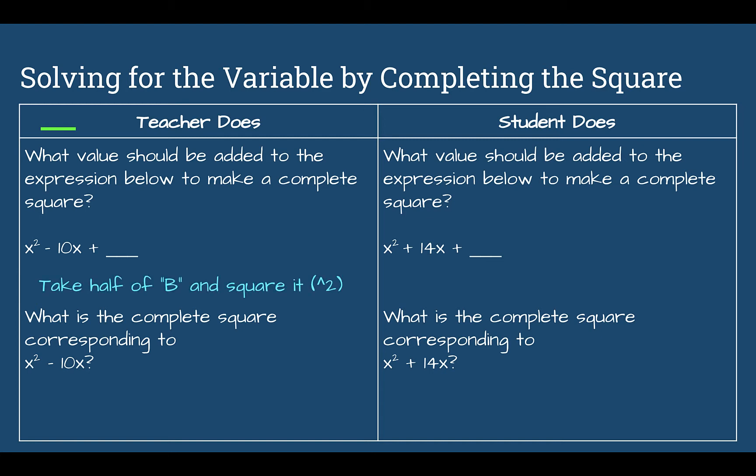You're going to take half of b and square it. Half of b — b was negative 10 — half of that is negative 5. Then we square it: negative 5 times negative 5 is 25. So 25 is the value we need to add. We took half of b and squared it.